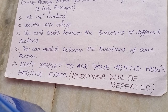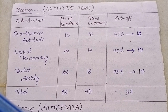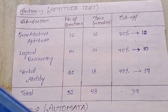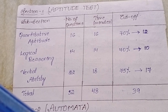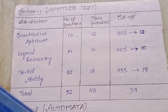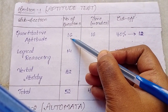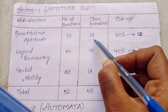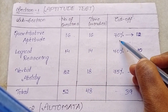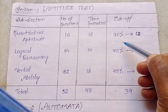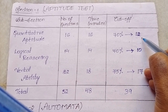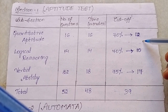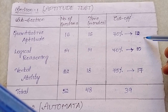The utmost important thing is the exam structure. Section one is the aptitude test with three subsections: quantitative aptitude, logical reasoning, and verbal ability. In quantitative aptitude, 16 questions will be asked with 16 minutes allotted, and the cutoff is 70 percentile — meaning you need to answer 12 questions correctly. Please make sure that you prepare to this level.